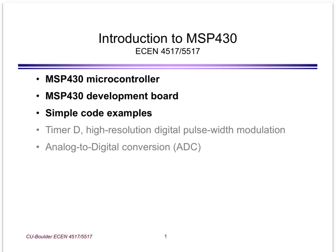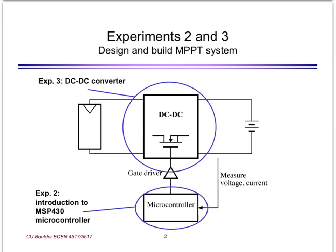The purpose of this module is to introduce the Texas Instruments MSP430 microcontroller, the development board we are going to use in the lab, and a few very simple code examples. The introduction to MSP430 will be done in Experiment 2, which is just one week, and then following that we are going to use the microcontroller as the controller for the DC-DC converter between the PV module and the battery in Experiment 3.